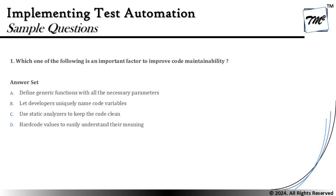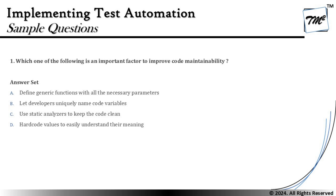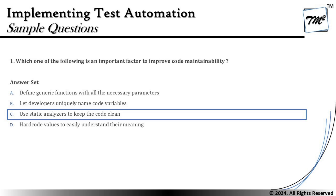Option D says: hardcode values to easily understand their meaning — that is totally the opposite of clean code practices. Hardcoding certainly does not result in maintainability; in fact, it's the right opposite. With that discussed, the right answer for this question is C: using static analyzers to keep the code clean as a factor to improve code maintainability.